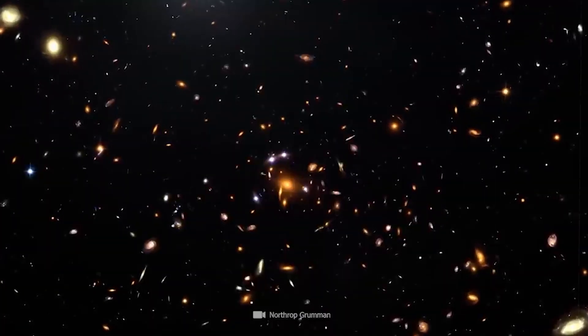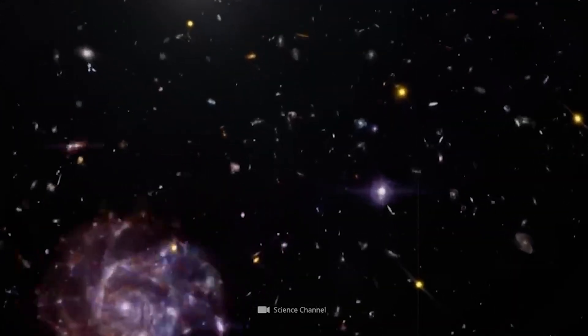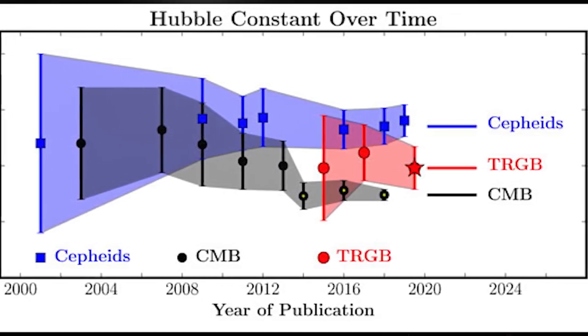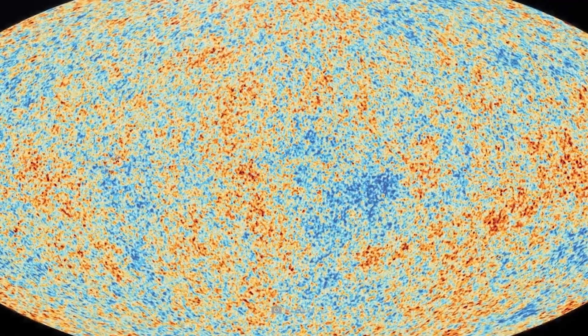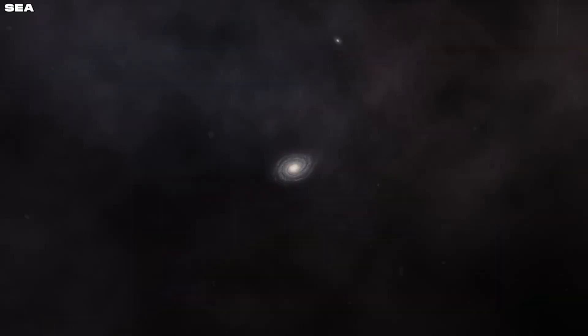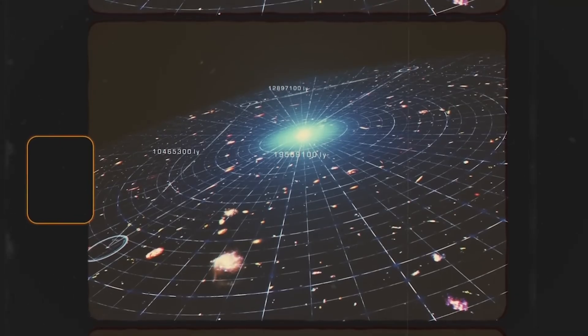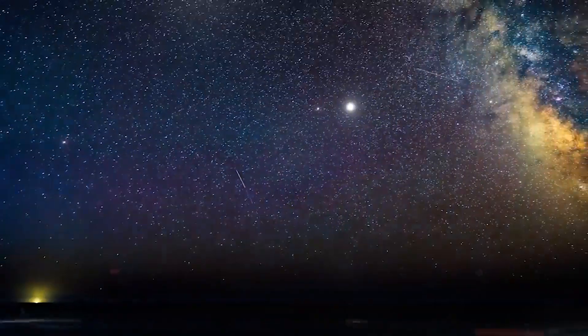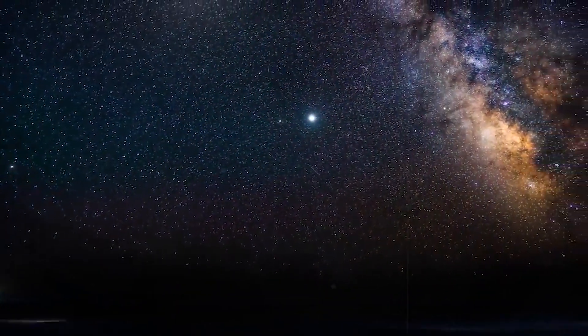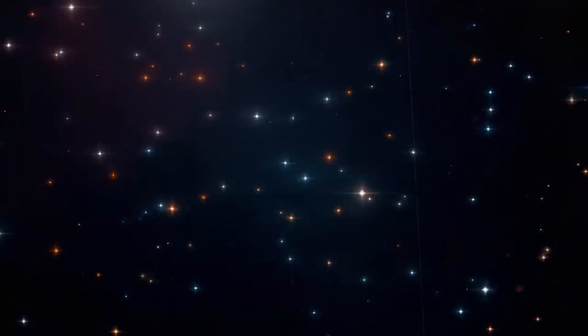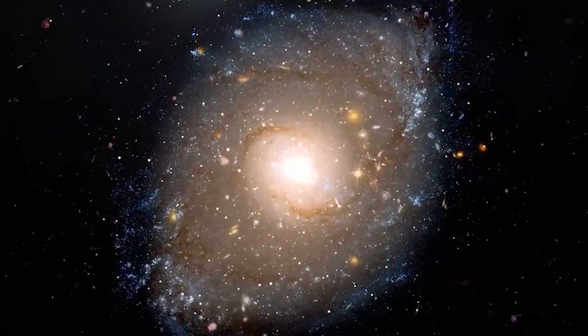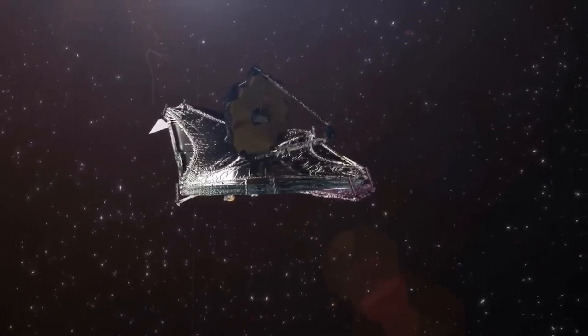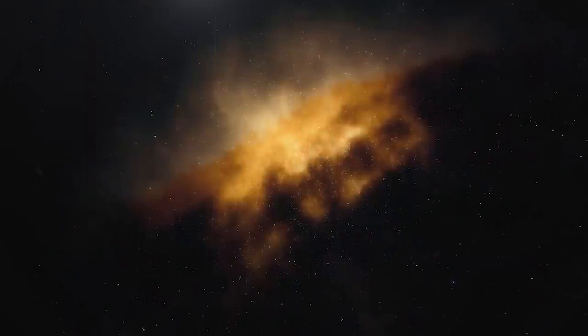These latest findings add weight to the growing suspicion that the universe is not as homogeneous as previously assumed. Before these discoveries, there were already signs of inconsistency, such as differing measurements of the universe's expansion rate, known as the Hubble Tension. If the universe is not uniform, it might explain why its expansion is not happening evenly across all regions. The James Webb Space Telescope has played an important role in confirming the Hubble Tension, shedding new light on the universe's true nature.